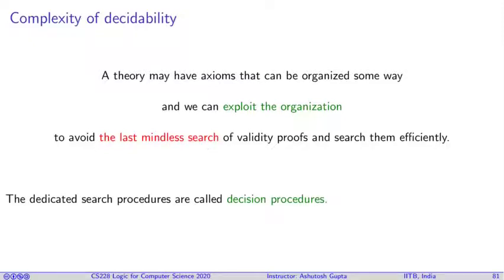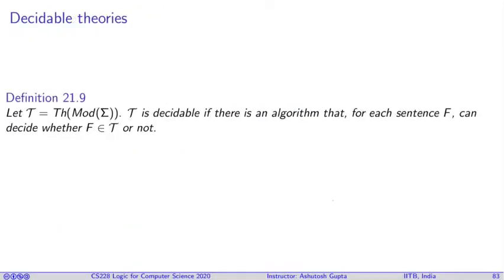Such dedicated algorithms or procedures are called decision procedures. So a theory is decidable if there is an algorithm such that for each sentence F, we can decide that F belongs to the theory or not.